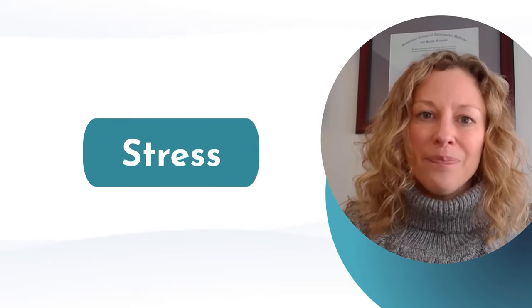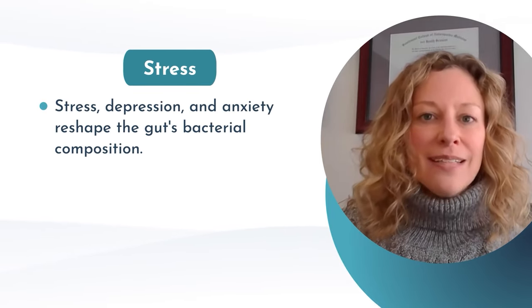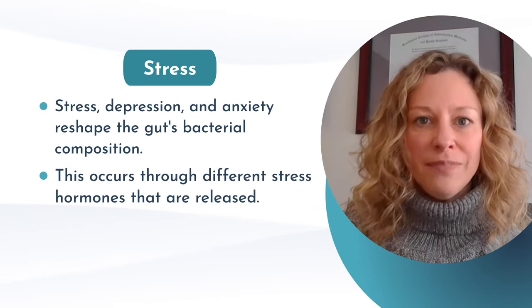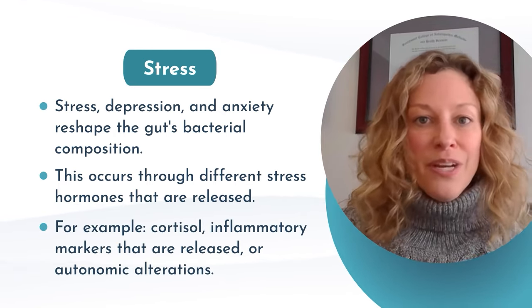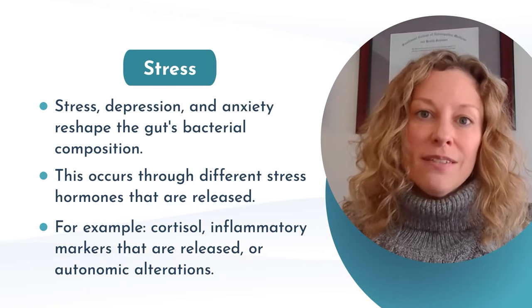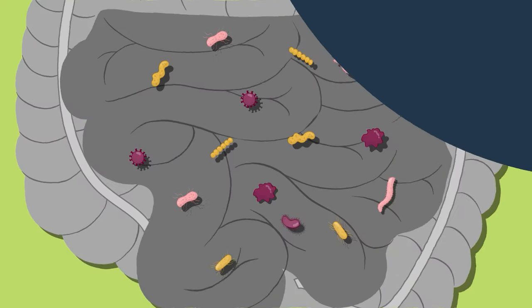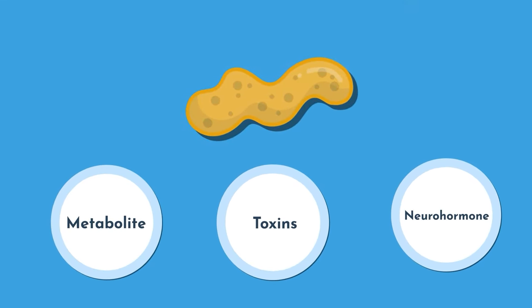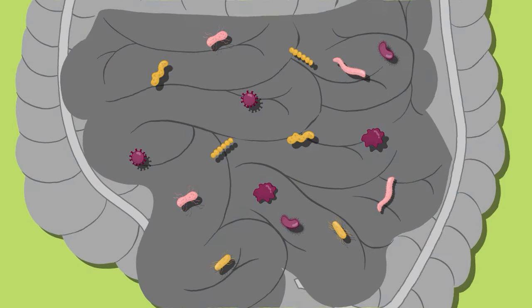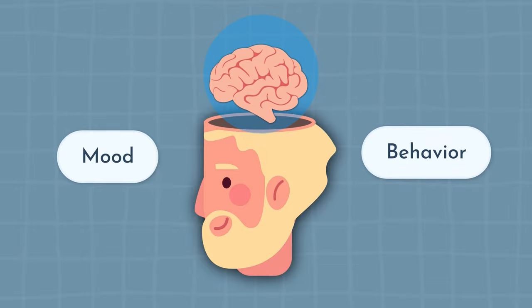Stress absolutely affects the microbiome. Stress, depression, and anxiety reshape the gut's bacterial composition. This occurs through different stress hormones that are released — for example, cortisol — inflammatory markers that are released, or autonomic alterations. In turn, the gut bacteria change and release different metabolites, toxins, or neurohormones that continue to alter the microbiome and affect our mood and behaviors. This is a fascinating area with a lot of ongoing research.